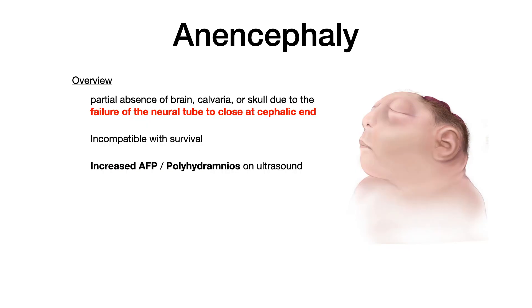The other pathology to discuss is anencephaly — a sad and unfortunate congenital malformation where you have partial absence of the brain, calvaria, or skull because the neural tube didn't close at the cephalic end. Spina bifida is at the caudal end, but anencephaly is the cephalic end, up at the top where the head would be. Anencephaly is incompatible with life — if a developing baby has anencephaly, it will either be stillborn or pass within a few hours of birth. In anencephaly, you'll see increased levels of AFP and polyhydramnios, because there's a hole up where the head should be that allows leakage of fluid.